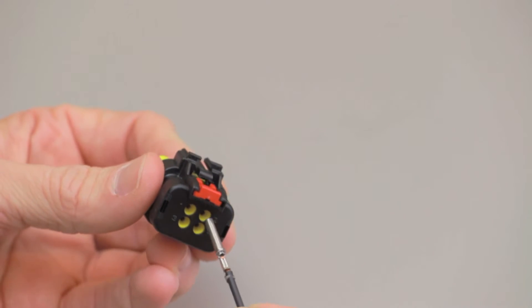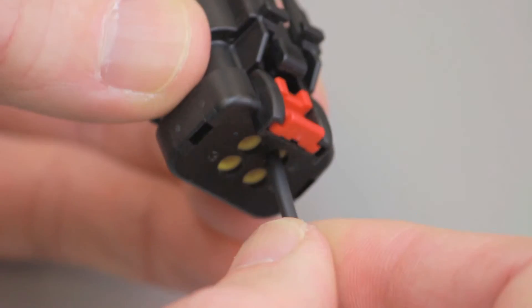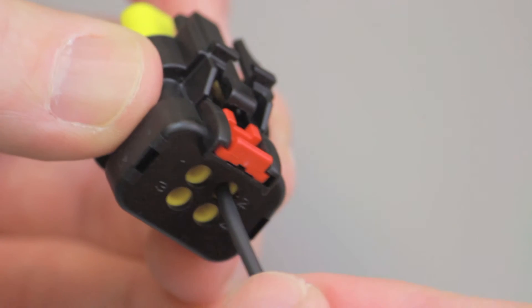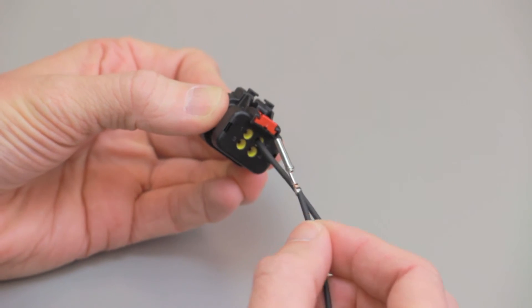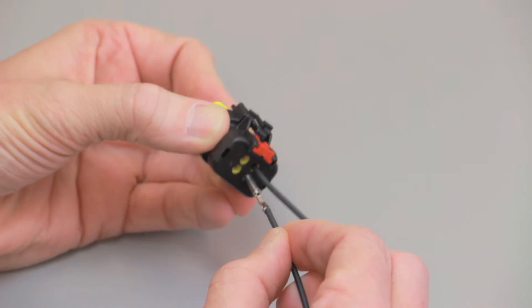Insert the contact into the connector cavity until you hear and feel a click. A slight tug will verify the contact is locked in place. Repeat this process until all of the cavities are filled.